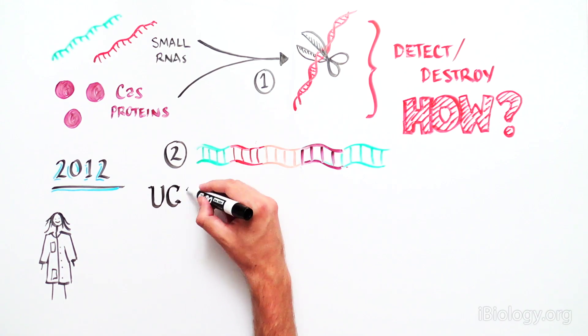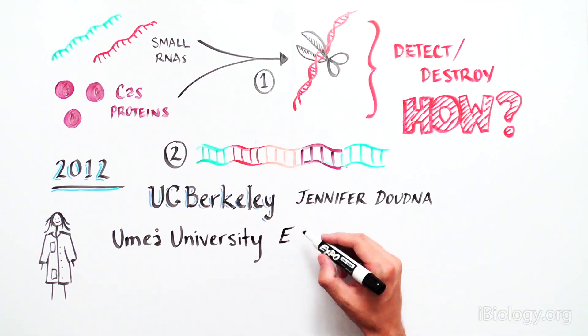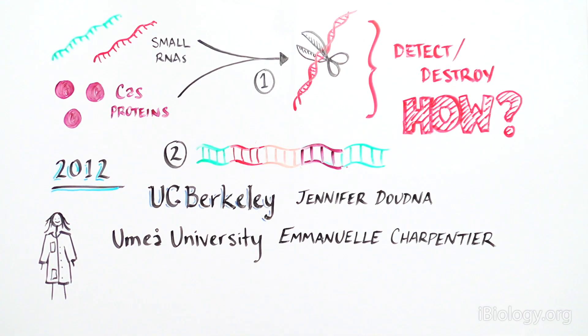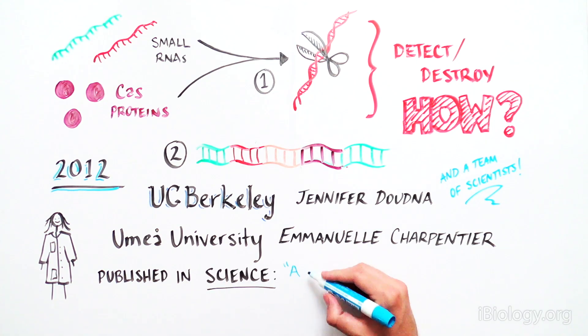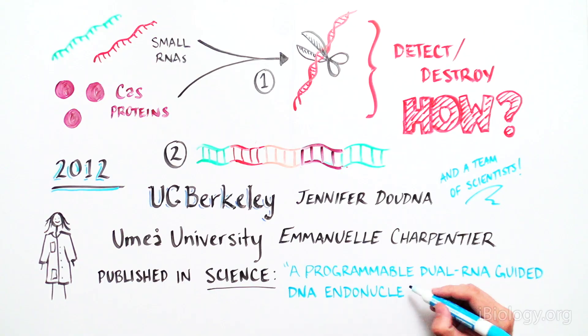This discovery came from a group of scientists led by Jennifer Doudna at UC Berkeley and Emmanuelle Charpentier at Umeå University in Sweden. They published their results in Science in an article titled, A Programmable Dual RNA Guided DNA Endonuclease in Adaptive Bacterial Immunity.